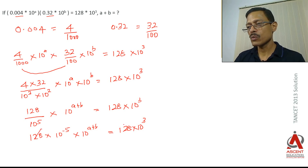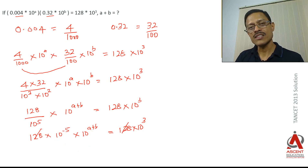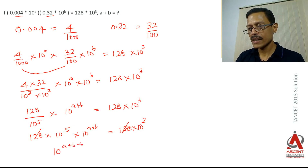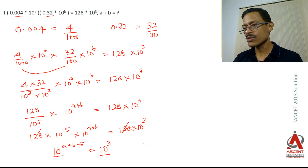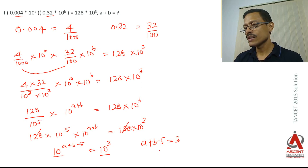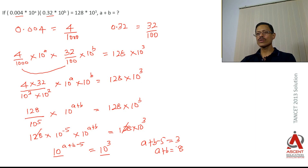Dividing both sides by 128, the 128s cancel. What we have is 10^(−5) × 10^(a+b) = 10³. Applying the rule 10^x × 10^y = 10^(x+y), this becomes 10^(a+b−5) = 10³. Since the bases are equal, we can equate the powers: a + b − 5 = 3, so a + b = 8. Choice 4 is the correct answer.